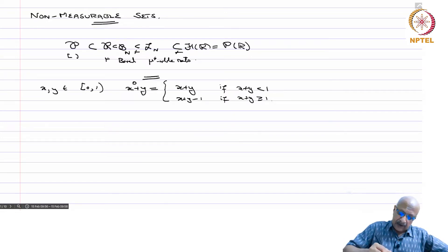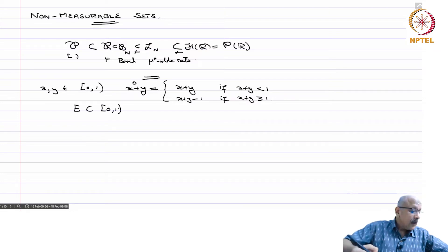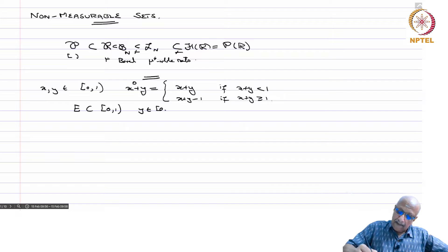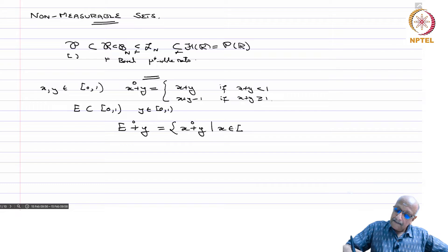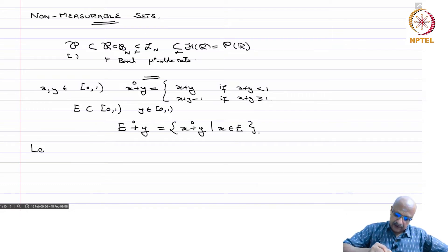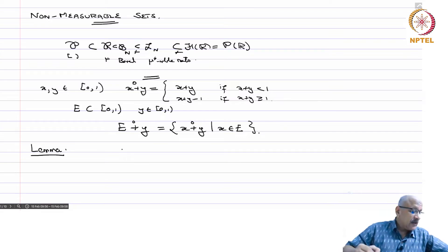If E is a subset of [0,1) and y belongs to [0,1), we write E plus y as the set of all x plus y (mod 1) for x in E. Now we have the following lemma, which is based on the translation invariance of the Lebesgue measure.